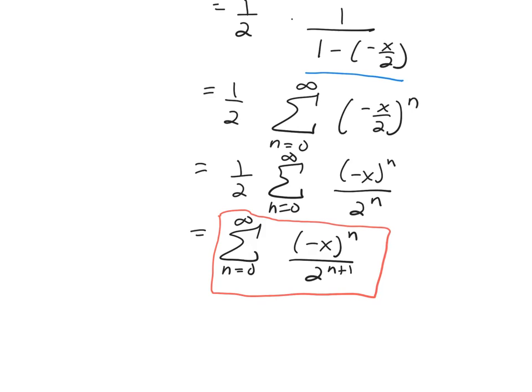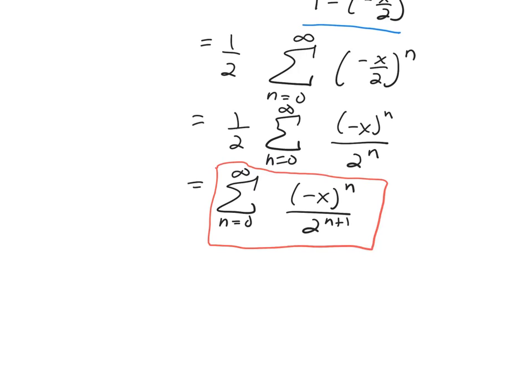Now I know this problem didn't ask you for interval convergence, but what if it did? So you can write out some of the terms if you need to do that. That might help. So it'll be 1 over 2, negative x over 2 squared plus a positive x squared over 2 cubed and so forth.